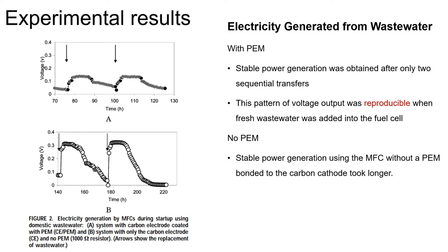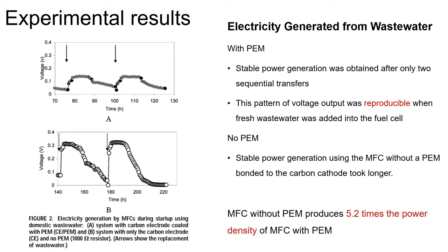Next, experimental results — electricity generated from wastewater. In figure A, with proton exchange membrane, stable power generation was obtained after only two sequential transfers. This pattern of voltage output was reproducible when fresh wastewater was added into the fuel cell. In figure B, without proton exchange membrane, stable power generation took longer. However, after 140 hours of operation, a consistent maximum voltage of 0.32 volt was achieved. Microbial fuel cells without proton exchange membrane produce 5.2 times the power density of microbial fuel cells with proton exchange membrane.